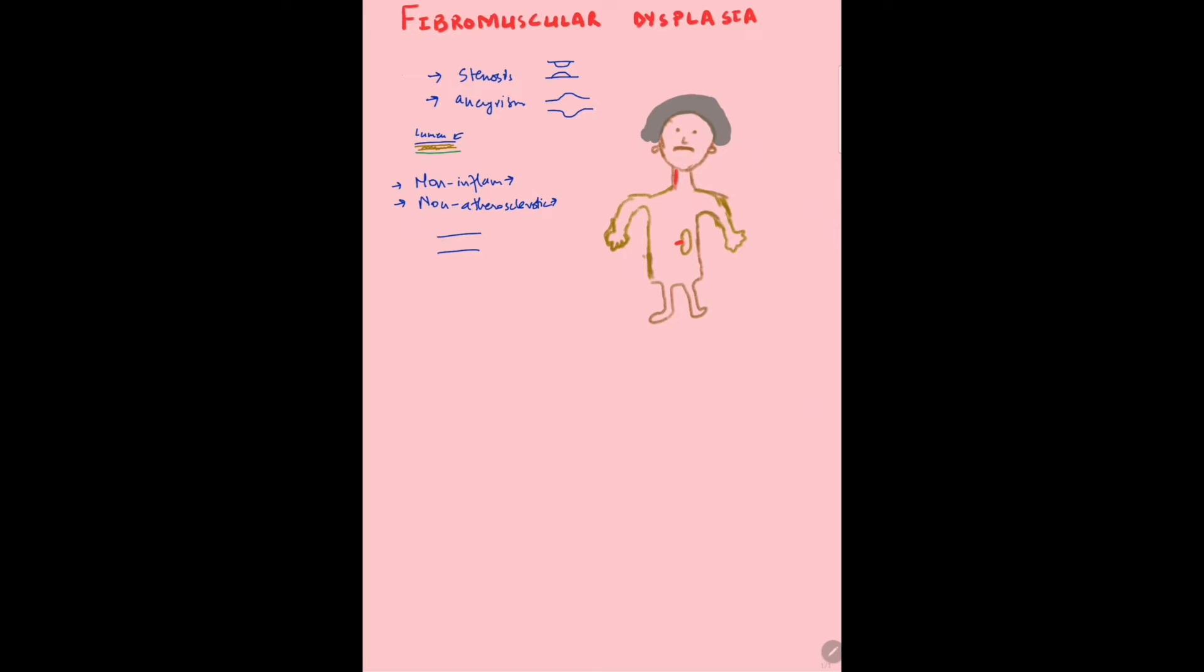In elderly patients, atherosclerosis is caused by the buildup of fat, cholesterol, and atheromas. But in fibromuscular dysplasia, it's not because of fat buildup. It's non-inflammatory, non-atherosclerotic, and mostly structural abnormality within the vessels.